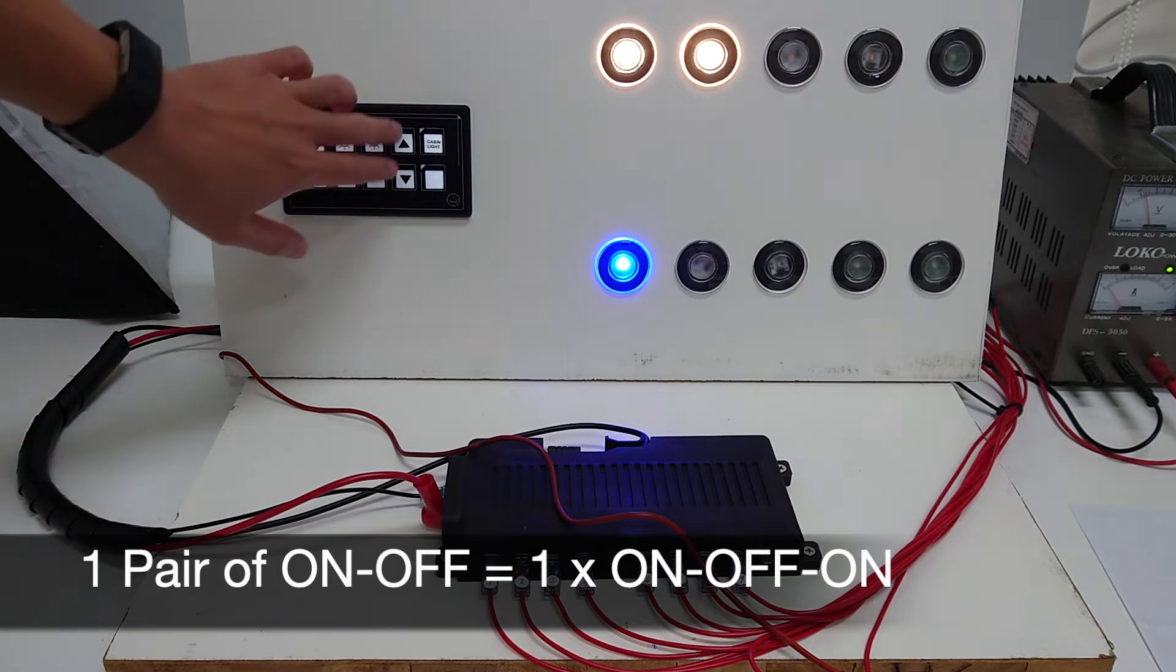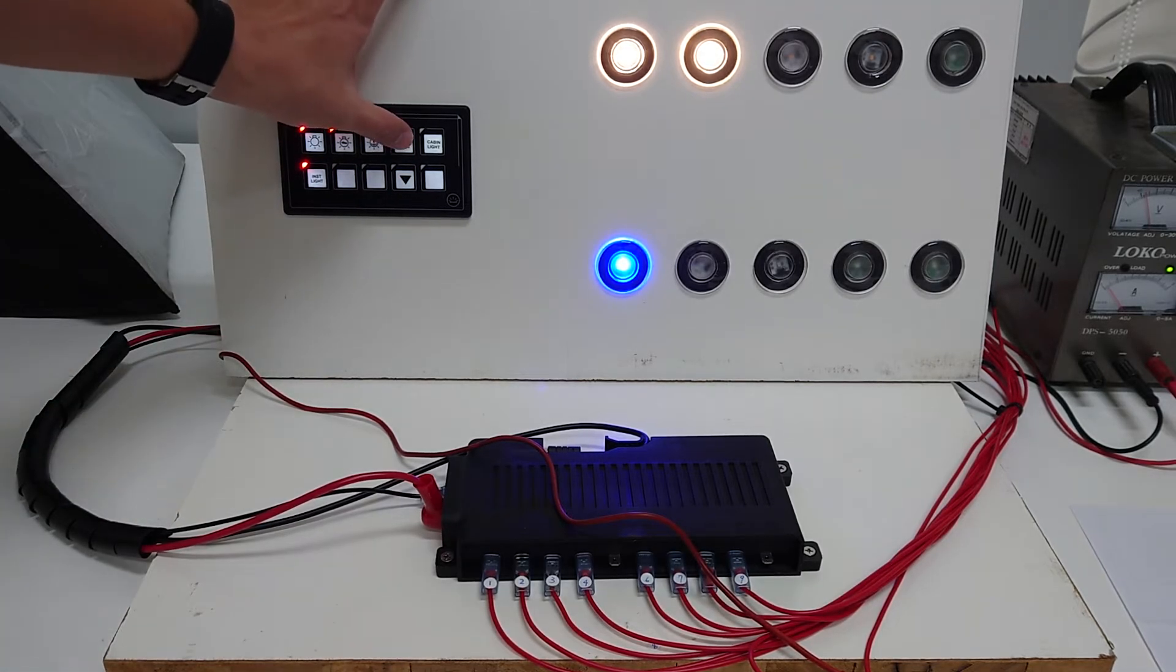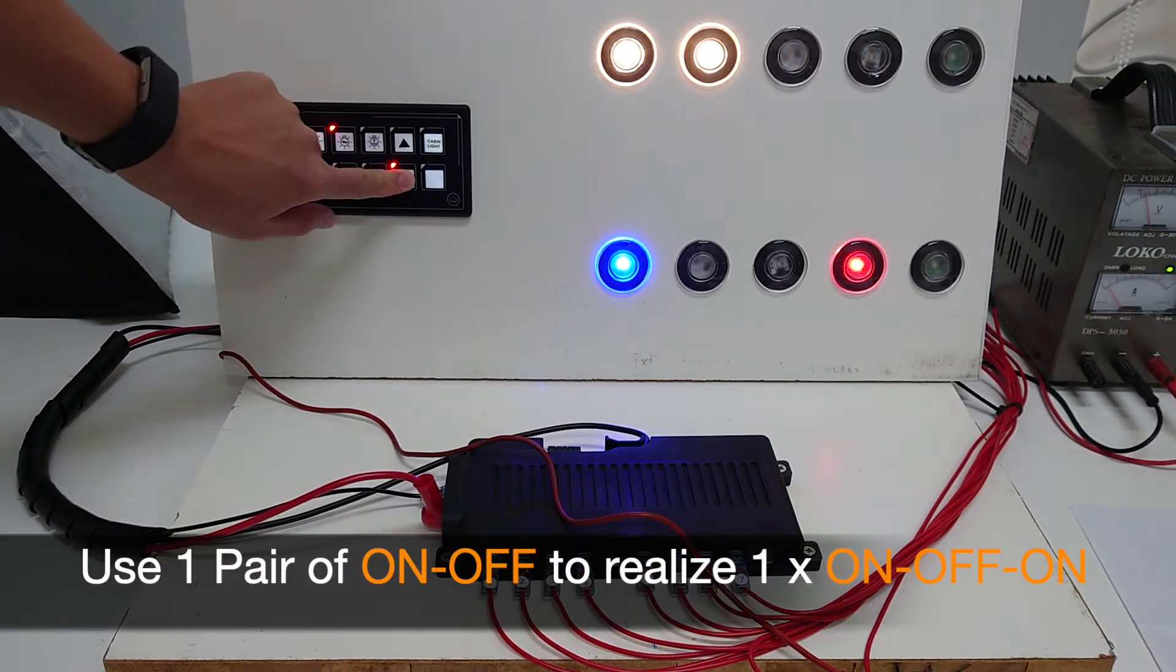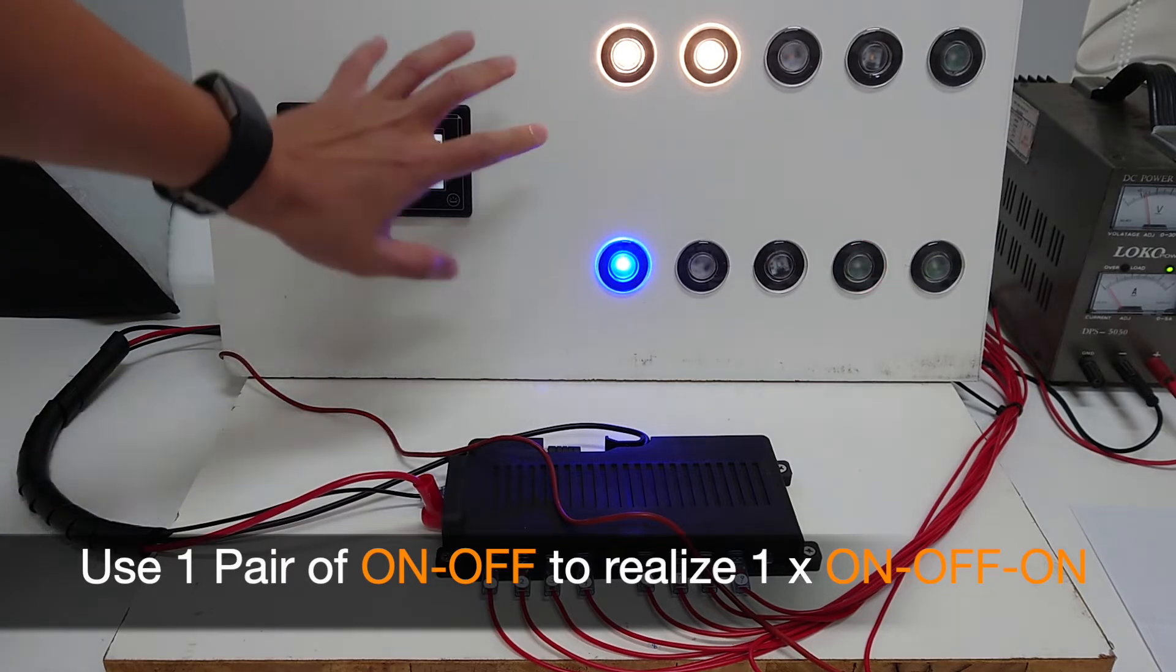Like these two here - this one is in charge of the first arm and this one is in charge of the second arm. This way we can realize an on-off-on momentary switch in the membrane touch panel just like this.